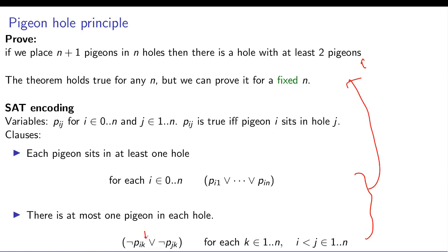For a given hole k, if two pigeons are sitting, then this formula becomes unsat. So basically you say not p_ik or not p_jk, and then you add this clause for every k and i less than j. So then this whole thing together solves the pigeonhole principle.